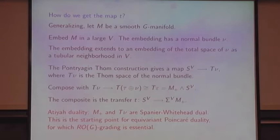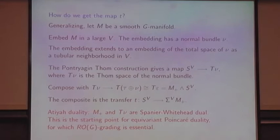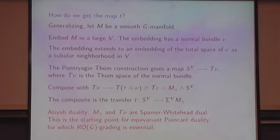What I've just described is the starting point of equivariant Atiyah duality. Non-equivariantly, Atiyah duality says that if you take a smooth manifold and give it a disjoint base point, then that is dual to the Thom complex of the normal bundle. It's classical theory going back to Spanier-Whitehead in the 50s, and it's really what Poincaré duality is about. When you have an orientation of a bundle you get a Thom isomorphism. You compose Spanier-Whitehead duality with a Thom isomorphism — that is Poincaré duality. It works the same way equivariantly except that orientation theory is really hard equivariantly and not terribly well understood. But ROG grading is essential.